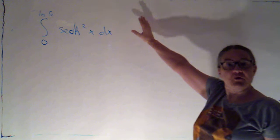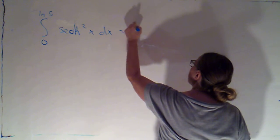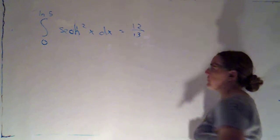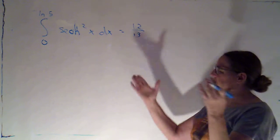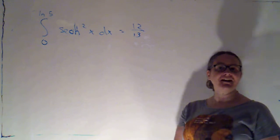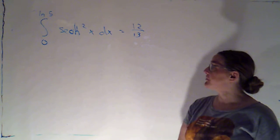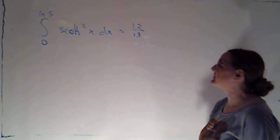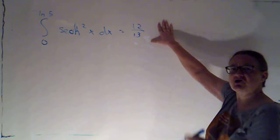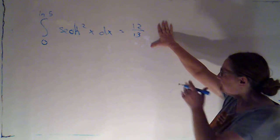Alright, here's the problem I left you with at the end of the last video. If you worked it out and you got 12 thirteenths, probably you did it right. So if you want to move on to the next video, that's totally fine. If you want to sit down here and work through this together, that's totally fine too. If you didn't get that, or if you're feeling shaky on your hyperbolic trig, feel free to stick around.